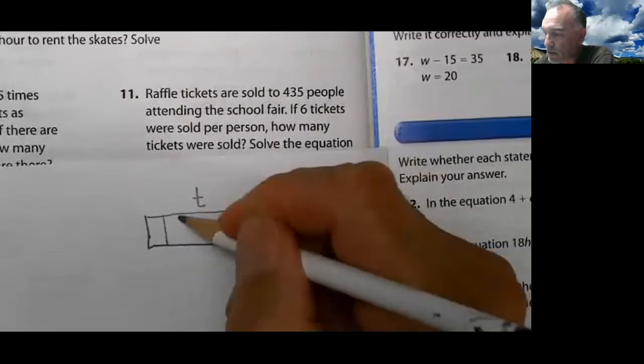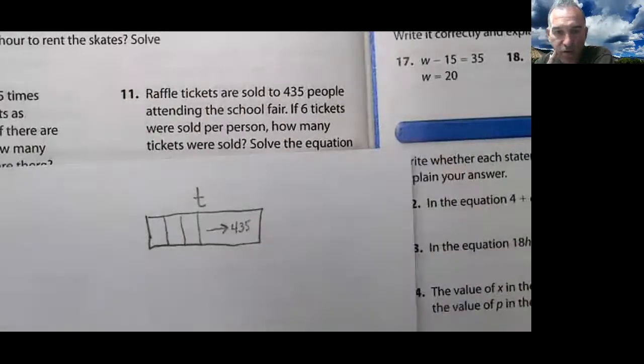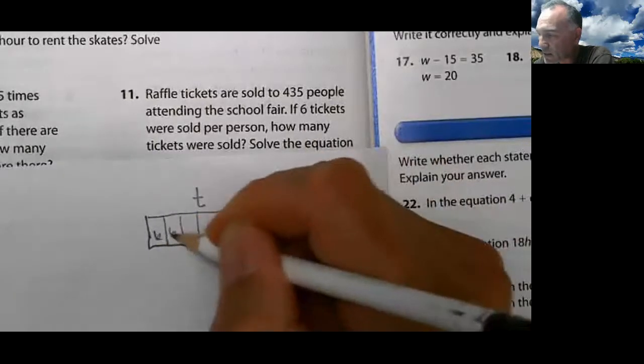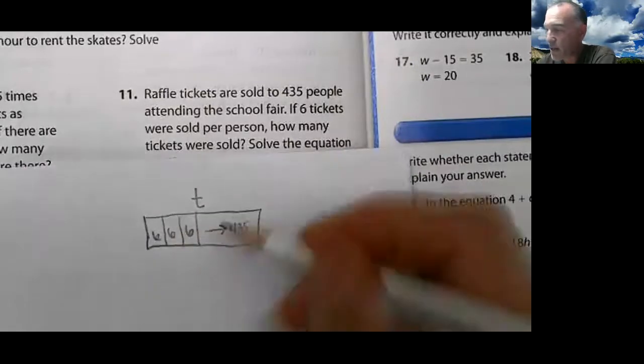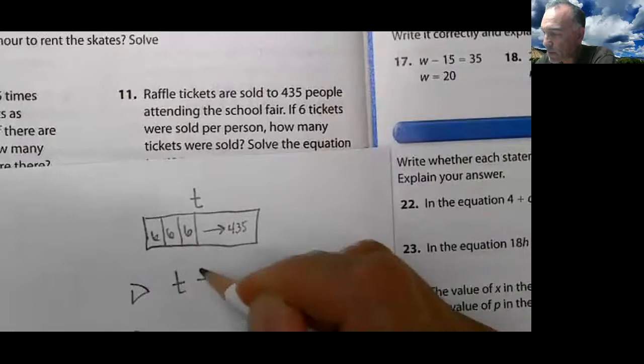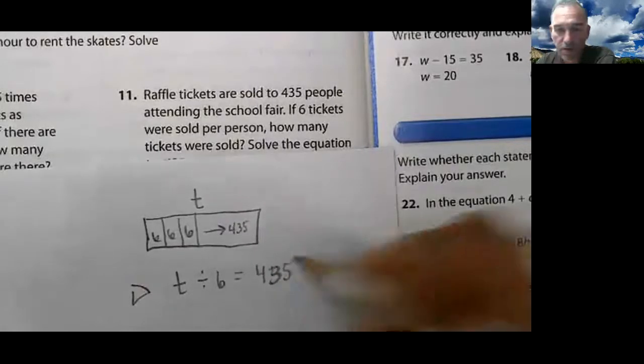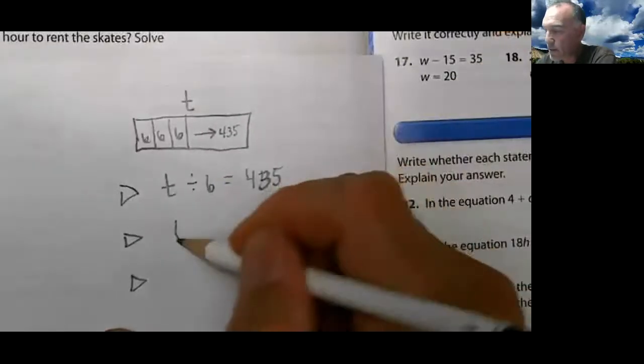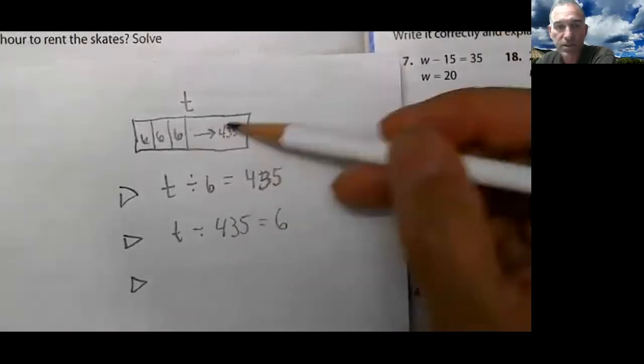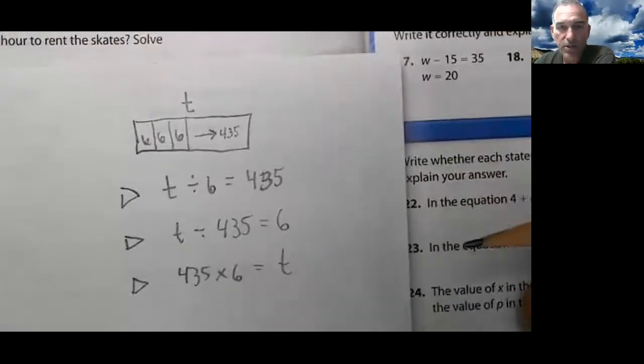It says 435 people. Well, I don't want to draw 435 boxes. Do you? No. There's 435 boxes that I've just drawn. Each of them were sold 6. Right? So I could do one way, two way, three ways. T divided by 6 gets 4, oops, 435. I could do T divided by 435 equals 6. Or I could do 6 times 435. Does the order matter? No.